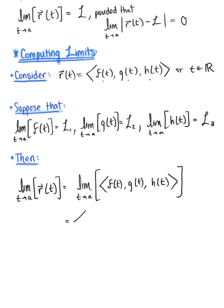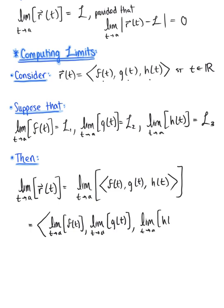We can keep it in its vector form. This equals the vector with the limit of each individual component: the limit as t approaches a of f(t), the limit as t approaches a of g(t), and the limit as t approaches a of h(t). We already know these three limits exist.